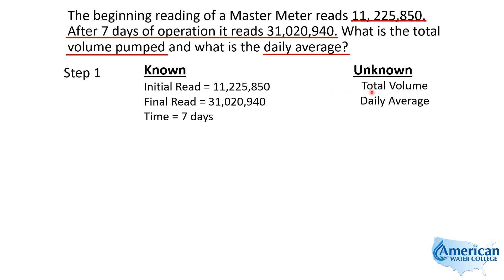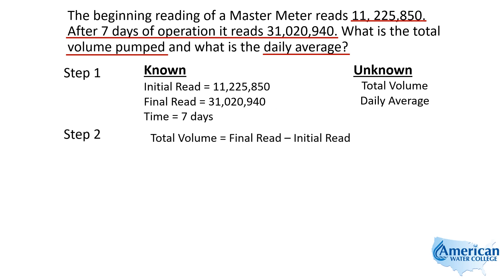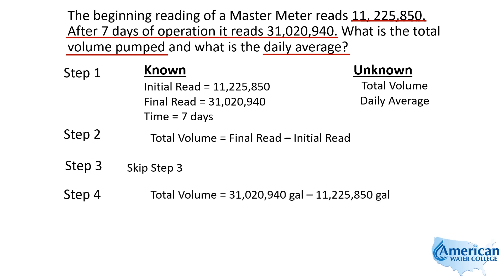For the first part, to get our total volume we simply take the difference between our final reading and the initial reading. So it's final read minus initial read. Let's plug in our numbers: 31 million minus 11 million and some change. That gives us a total volume of 19,795,090 gallons. That gives us our total volume.